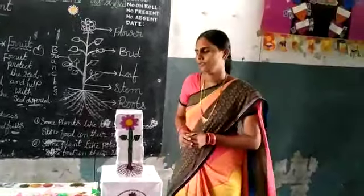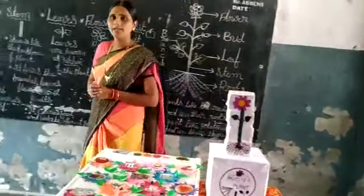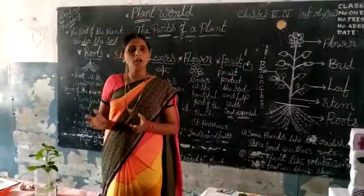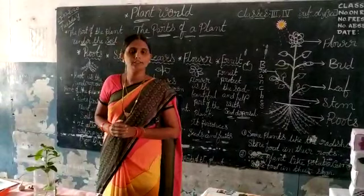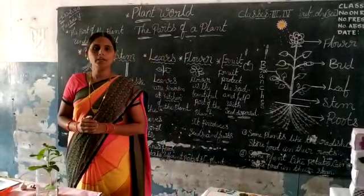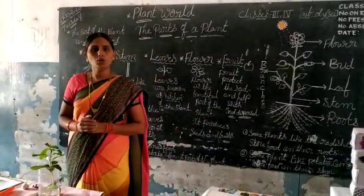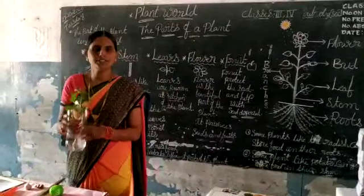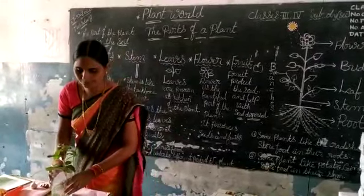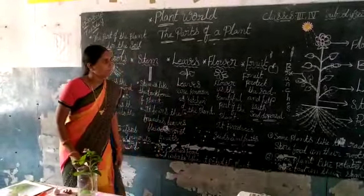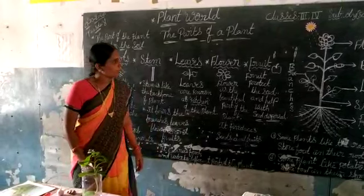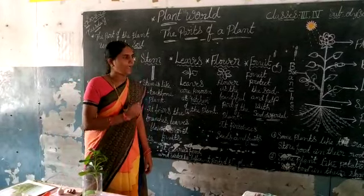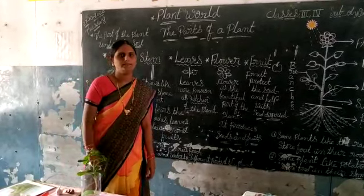Now, remember to plant one tree for future generations. Children, today's homework is to draw the diagram of a plant and label its parts.